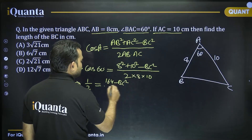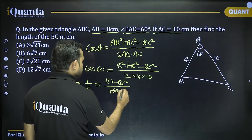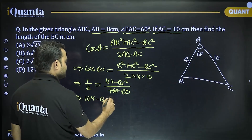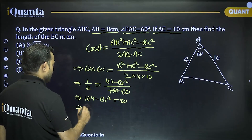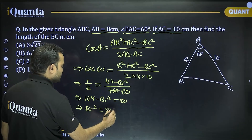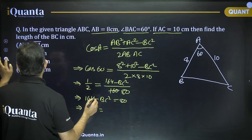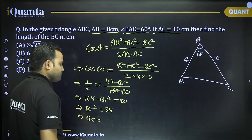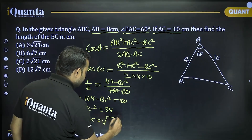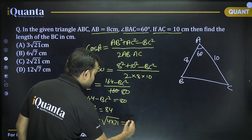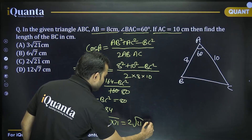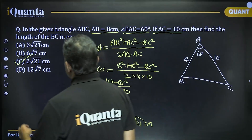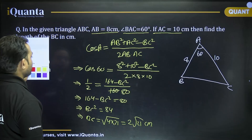Since cos 60° = 1/2, we get: 164 − BC² = 80, so BC² = 84. Now 84 = 4 × 21, so BC = 2√21 centimeters, which is option C.